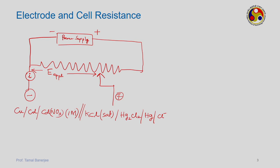Now suppose you have a load. Two things happen. This is the cathode where reduction occurs. The reduction reaction here is cadmium²⁺ getting reduced to cadmium. This equilibrium voltage is given as −0.403 V with respect to the normal hydrogen electrode, which is the ideal or reference non-polarized electrode.